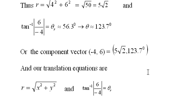Or the component form of the vector, negative 4 comma 6, is 5 times the square root of 2 in length, and 123.7 degrees. So we have translation equations, and they are: r is the square root of x squared plus y squared, and theta reference is the tangent inverse of y over x in absolute value.